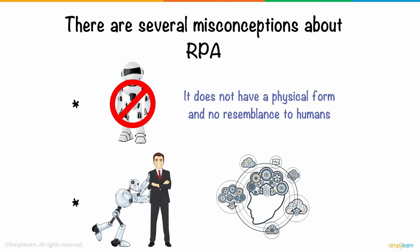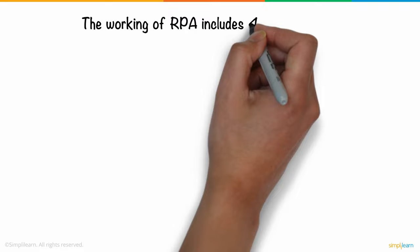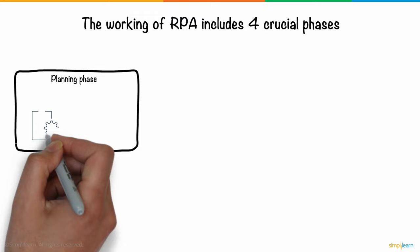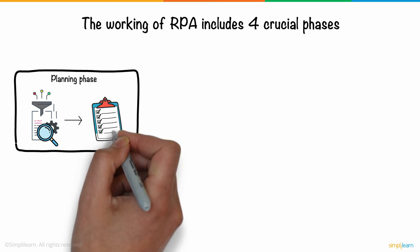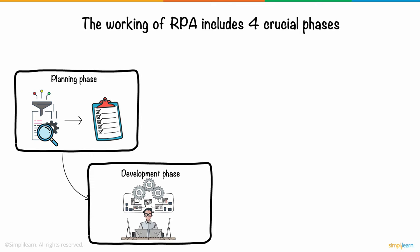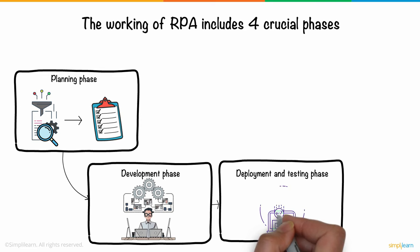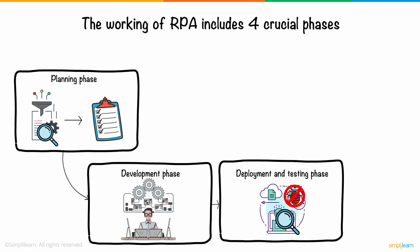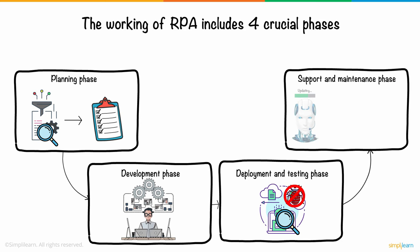The working of RPA includes four crucial phases. 1. The planning phase typically involves gathering the processes to be automated, identifying the test objects, and finalizing the implementation approach. 2. The development phase includes the creation of automation workflows as per the agreed plan. 3. Deployment and testing is a vital phase, since it uncovers any unexpected outages and ensures a bug-free product. 4. Lastly, there's the support and maintenance phase, which ensures that the product is continuously updated with smooth deployment across the user base.